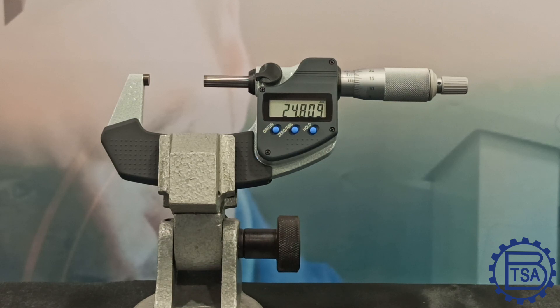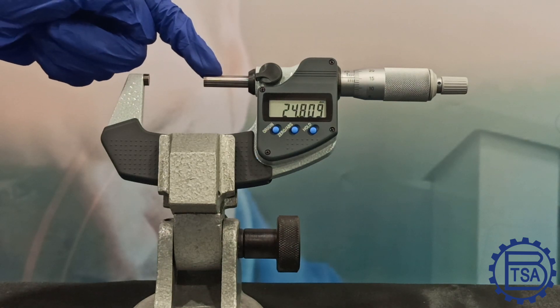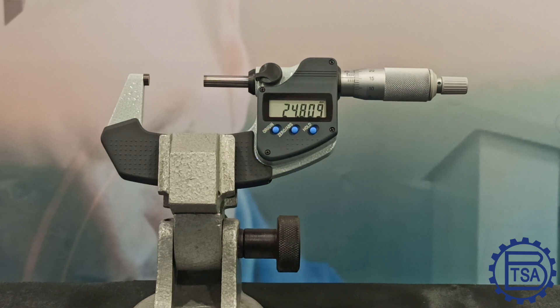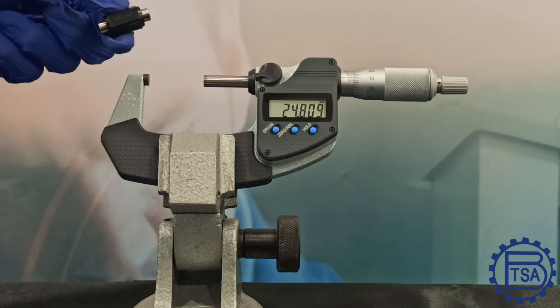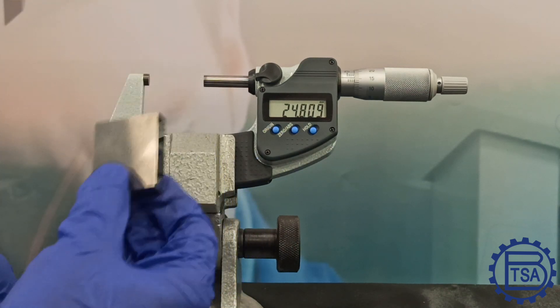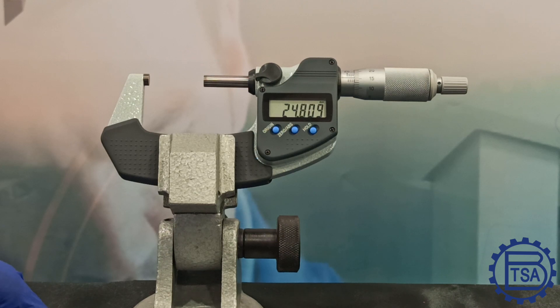In larger micrometers, the anvil and spindle do not come in contact with each other. In such micrometers, setting rods or slip gauges can be used, but make sure that the value is taken from the calibrated certificate and not from the gauge.